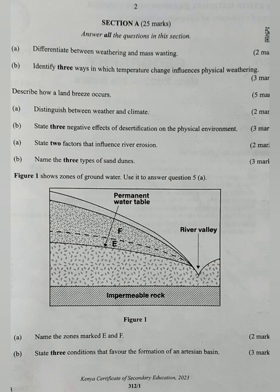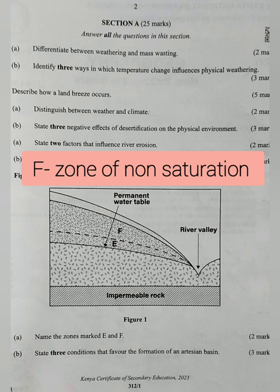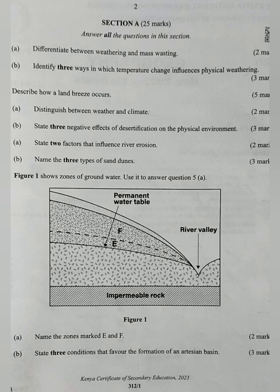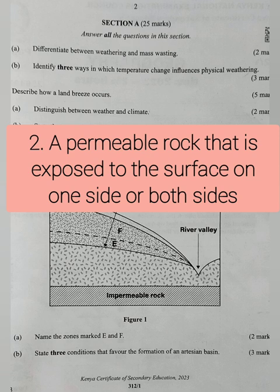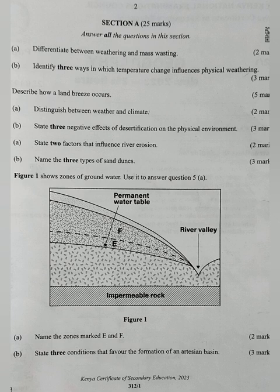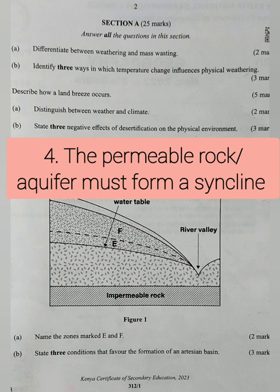Question 5A uses a diagram, Figure 1, showing zones of groundwater. Zone E is the zone of intermittent saturation and zone F is the zone of non-saturation. Question 5B: state three conditions that favor the formation of an artesian basin. One, a permeable rock or aquifer sandwiched between two impermeable rocks. Two, a permeable rock exposed to the surface on one or both sides for water to percolate downwards. Three, a permeable rock or aquifer that outcrops in a region of adequate water supply. Four, the permeable rock or aquifer must form a synclinal structure.